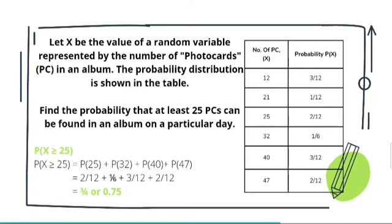Find the probability of X ≥ 25. The keywords here are 'greater than or equal to'. So the probabilities we're going to add are for 25, 32, 40, and 47: 2/12 + 1/6 + 3/12 + 2/12 = 3/4 or 0.75.